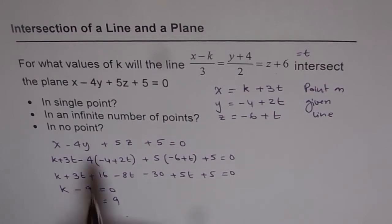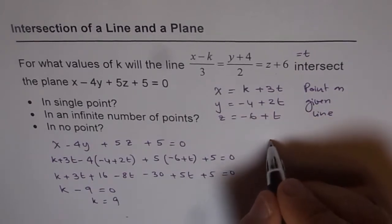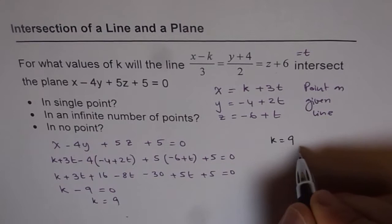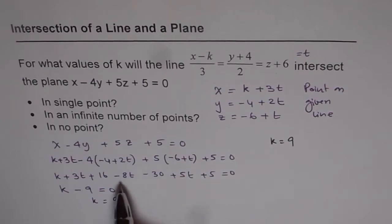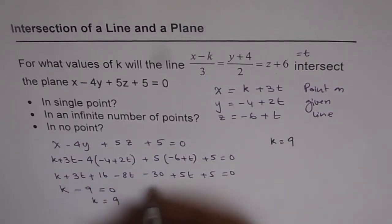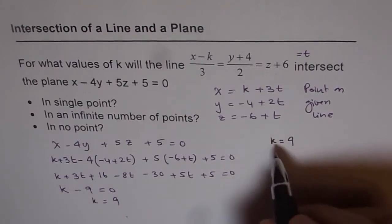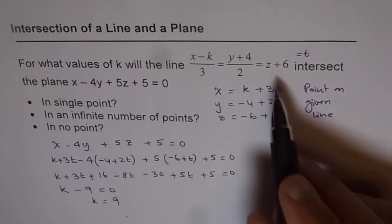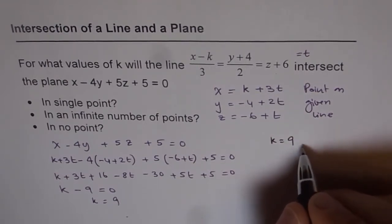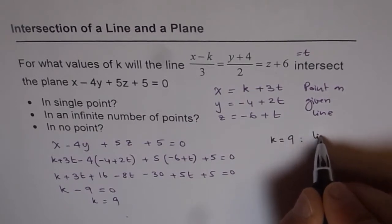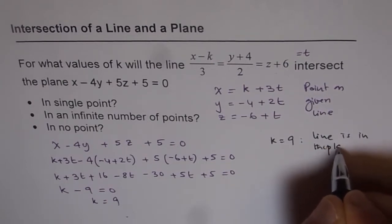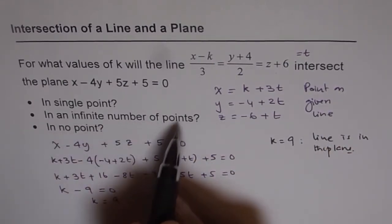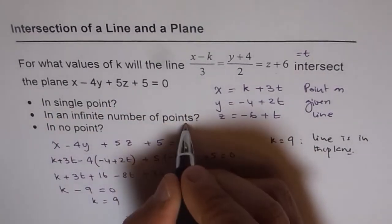If k equals 9, then the entire equation reduces to 0 equals 0. Since t got cancelled — we got 0t — for k equals 9, every point on the line is contained in the plane. So we say the line is in the plane, giving an infinite number of points of intersection. So for condition 2, k equals 9.